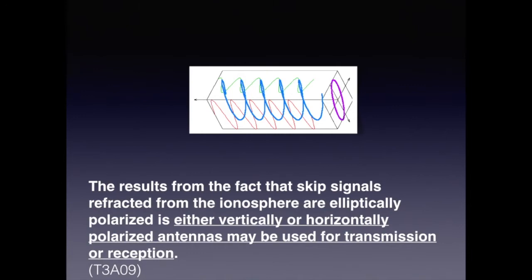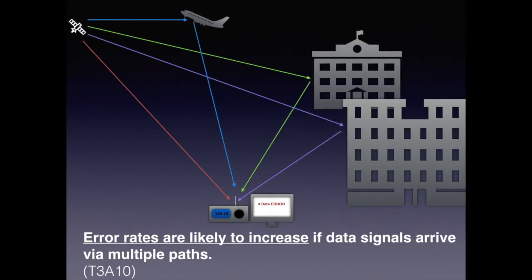Because of the nature and thickness of the ionosphere, it can cause radio waves to be refracted. This change in direction can make the signal elliptically polarized. For the exam, the result from the fact that skipped signals refracted from the ionosphere are elliptically polarized is that either vertical or horizontally polarized antennas may be used for transmission or reception. For data signals, error rates are likely to increase if the data signal arrives via different or multiple paths.